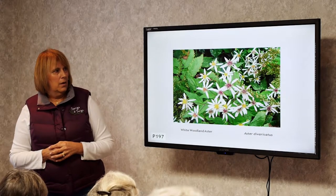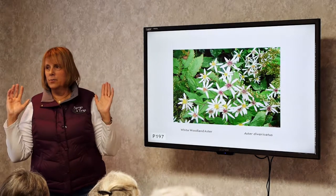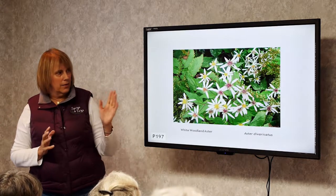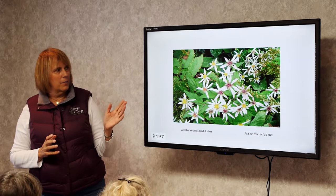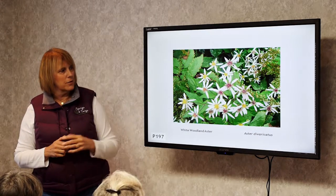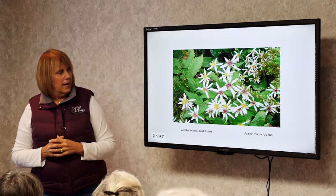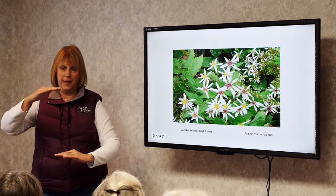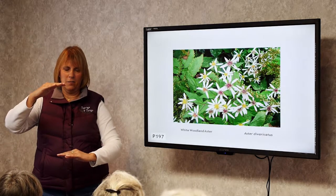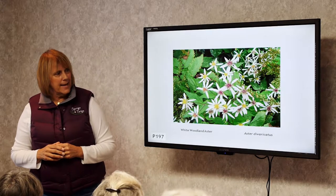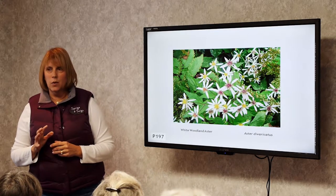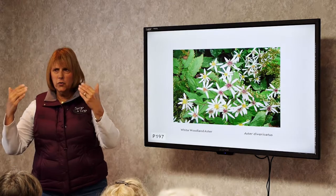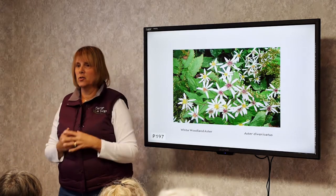White Woodland Aster. We have this all over the place in our woodlands around here. It's a great plant — another one that bees and butterflies go after before winter sets in. It has a white flower, likes a little moister woodland soil, and is usually found along the woodland edge so it can get some sunshine.